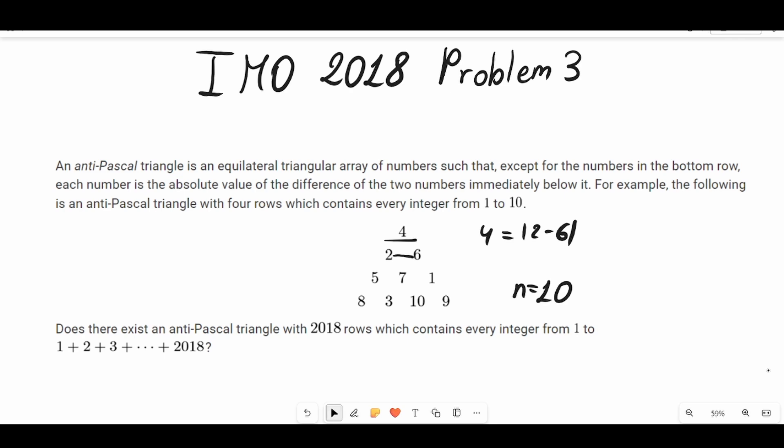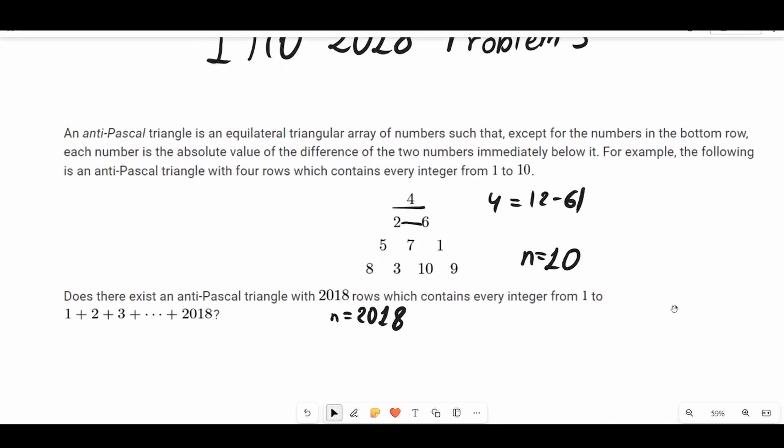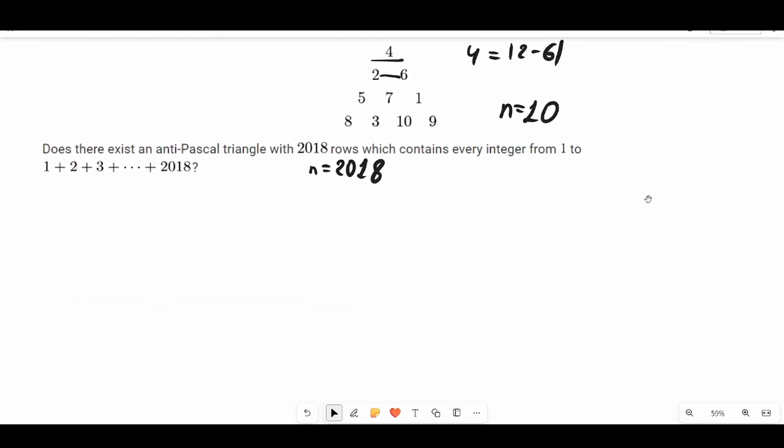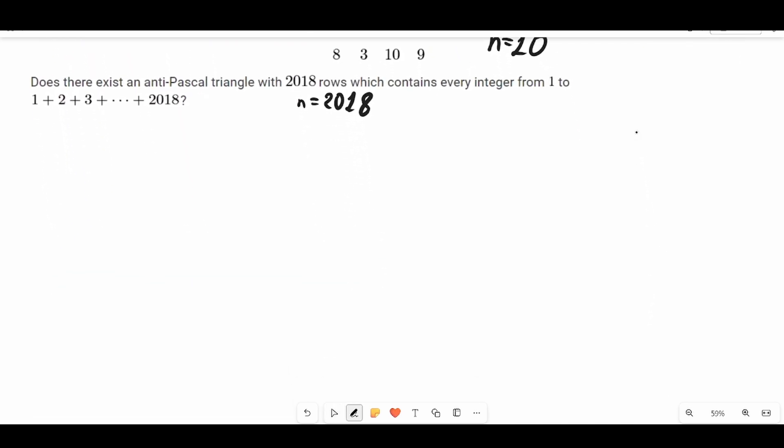The question in this problem was to construct an anti-Pascal triangle for n equals 2018 or prove that such an anti-Pascal triangle can't exist. Of course, the answer must be that such an anti-Pascal triangle can't exist.